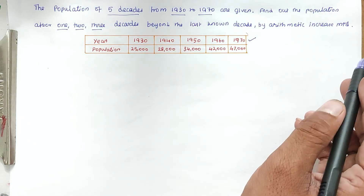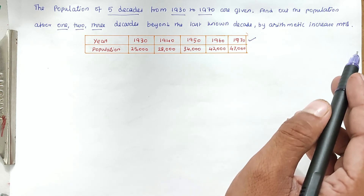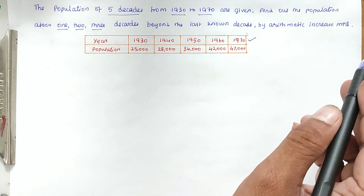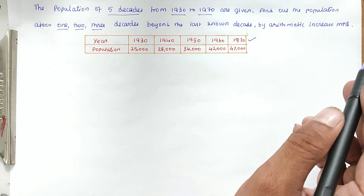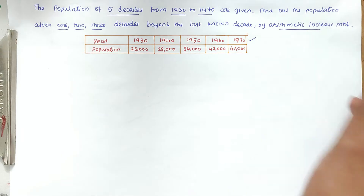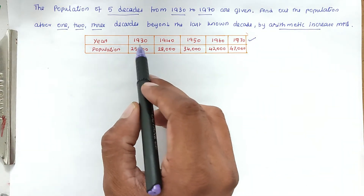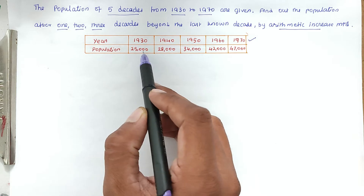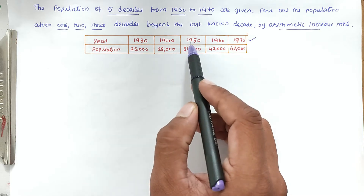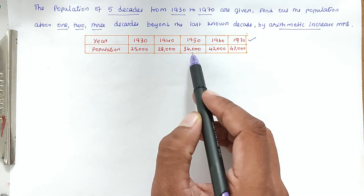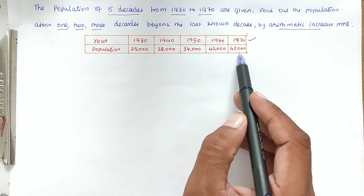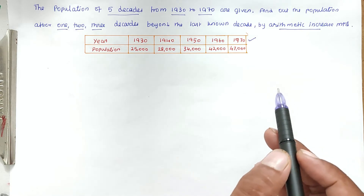We will use the arithmetic increase method. There are a lot of methods available for population forecasting — the arithmetic increase method, geometric method, incremental increase method, decremental increase method, and so on. We are using the arithmetic increase method. The given data: 1930 → 25,000; 1940 → 28,000; 1950 → 34,000; 1960 → 42,000; 1970 → 47,000.